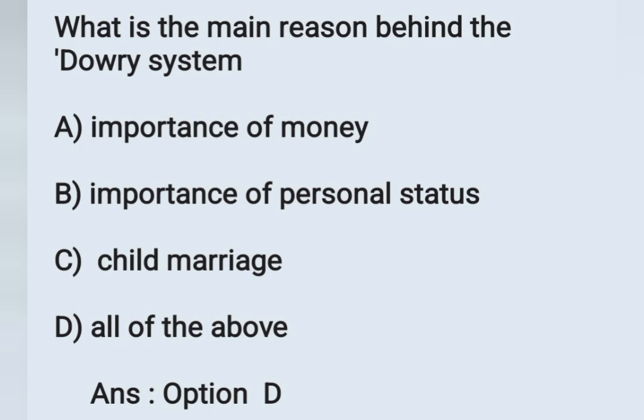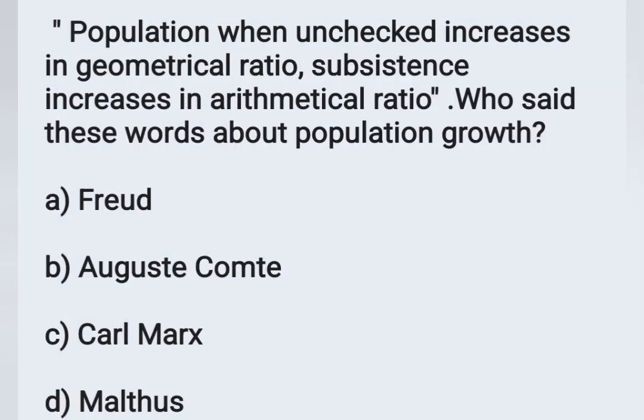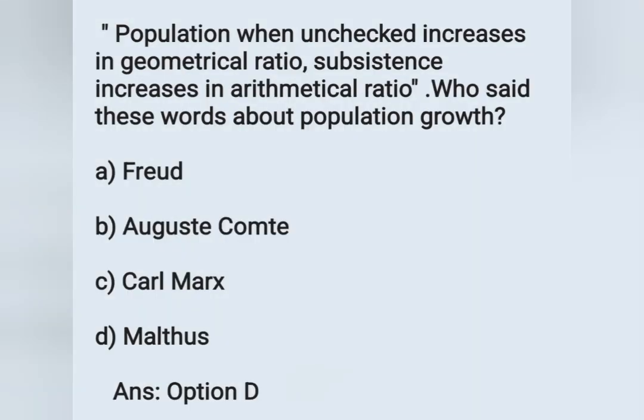The next question: 'Population, when unchecked, increases in geometrical ratio; subsistence increases only in mathematical ratio.' Who said these words about population growth? Options: A) Freud, B) August Comte, C) Karl Marx, D) Malthus. This was said by Malthus. Option D is the correct answer.